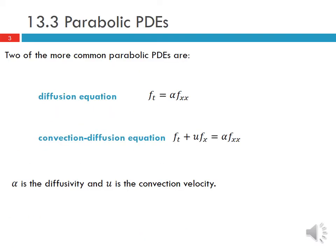Two of the more common parabolic PDEs are shown here. This one is sometimes called the diffusion equation where we have F_t equal to alpha F_xx. Another example is the convection diffusion equation where we have F_t plus u*F_x equal to alpha F_xx. The term alpha times the second derivative of F with respect to x is the diffusion term, and u*F_x is the convection term. Alpha is the diffusivity and u is the convection velocity.